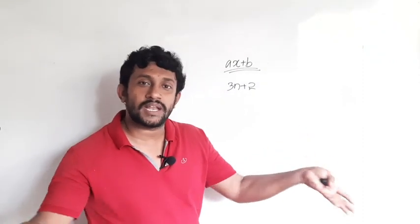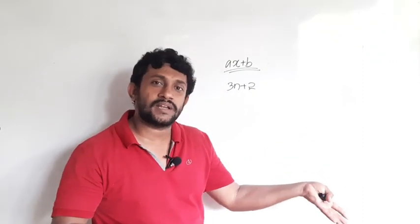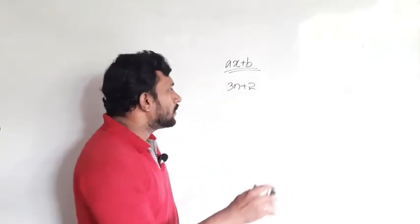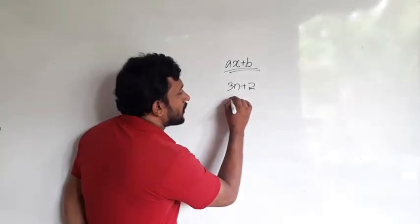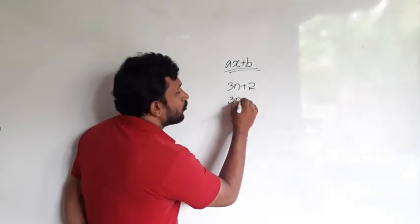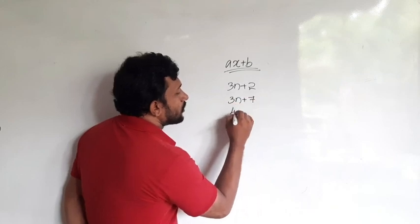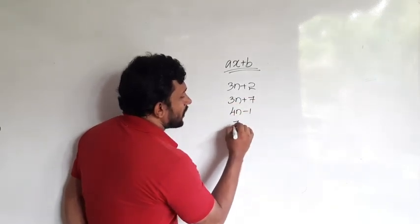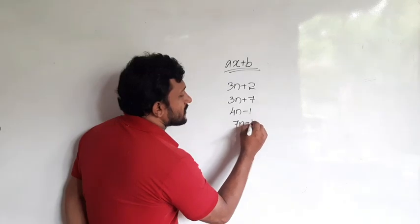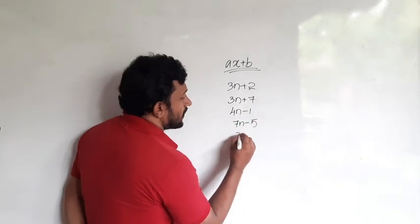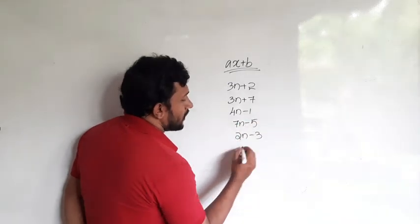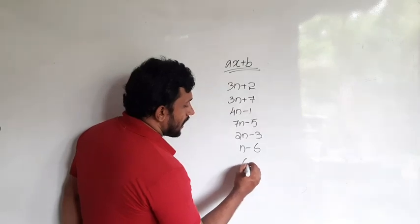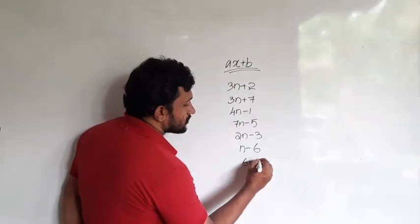For example: 5n plus 3, 4n plus 7, 100n plus 5. Also: 3n plus 7, 4n minus 1, 7n minus 5, 2n minus 3, n minus 6, 6n minus 8. These are all examples of first-degree algebraic expressions.